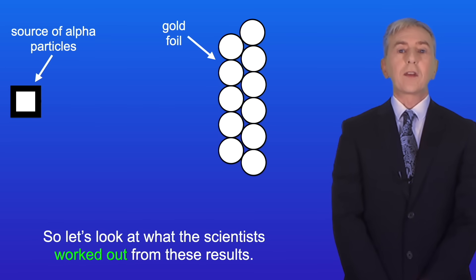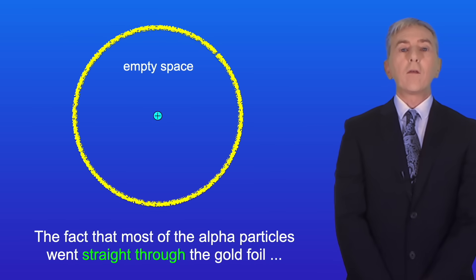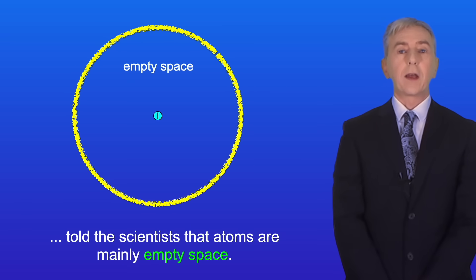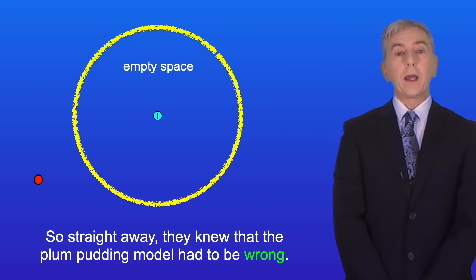So let's look at what the scientists worked out from these results. Now the fact that most of the alpha particles went straight through the gold foil told the scientists that atoms are mainly empty space. So straight away they knew that the plum pudding model had to be wrong.